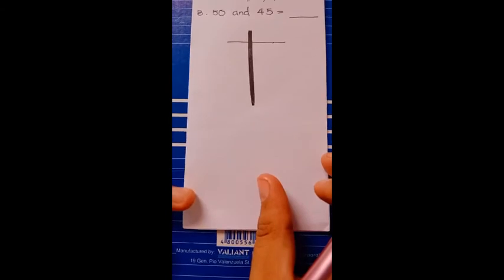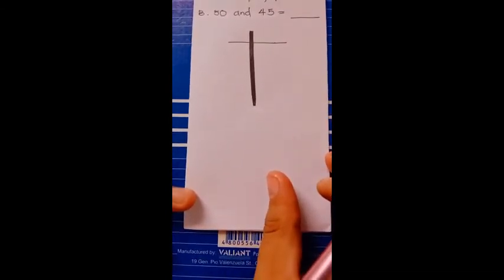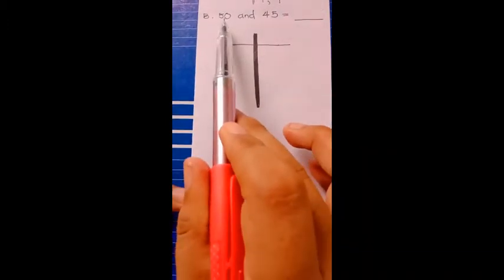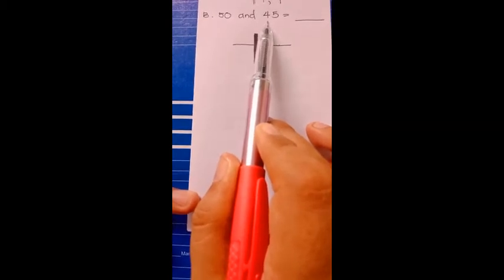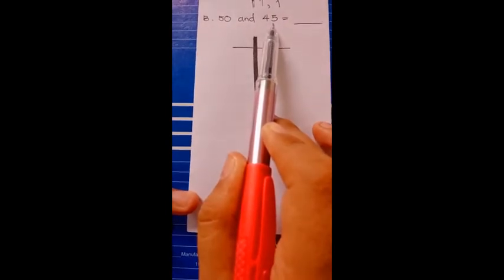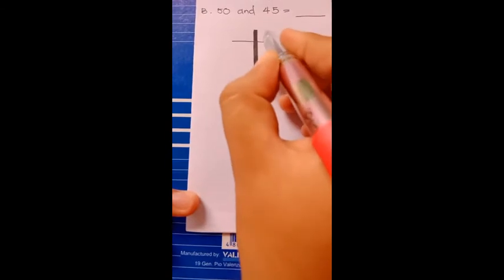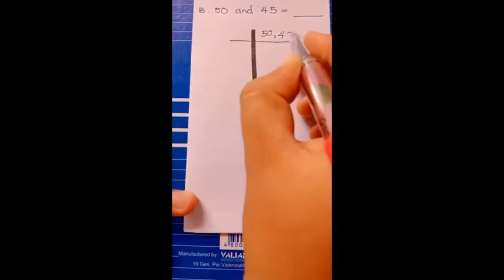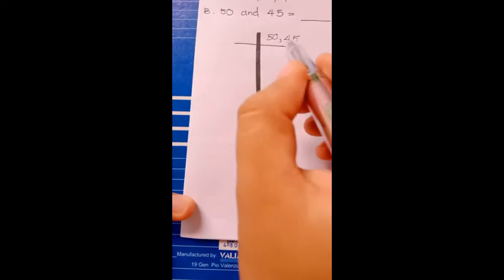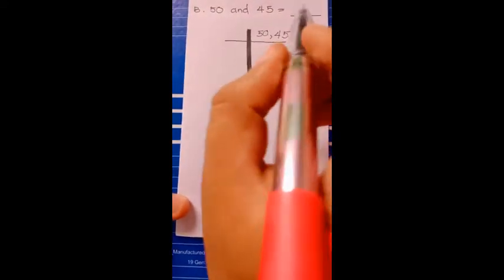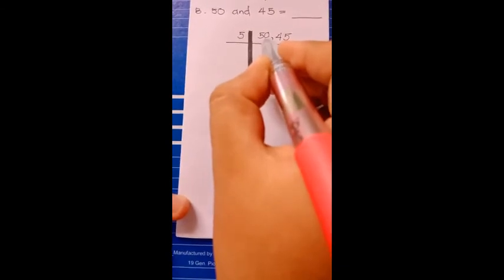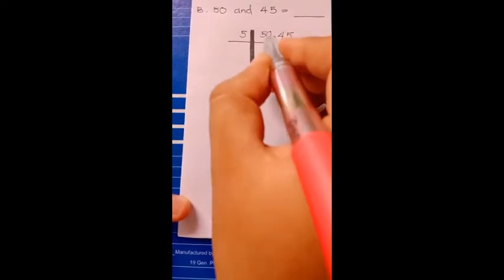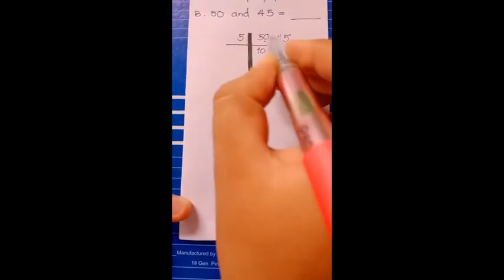Now that we are done finding the LCM of 60 and 100, which is 300, we will move on with our next part. We have the numbers 50 and 45. Let's find the least common multiple of these numbers using the continuous division method. We'll put here 50, comma, to separate the second number, 45. Think of a number we can divide into 50 and 45. Very good — that is 5, because numbers divisible by 5 end in 0 or 5.